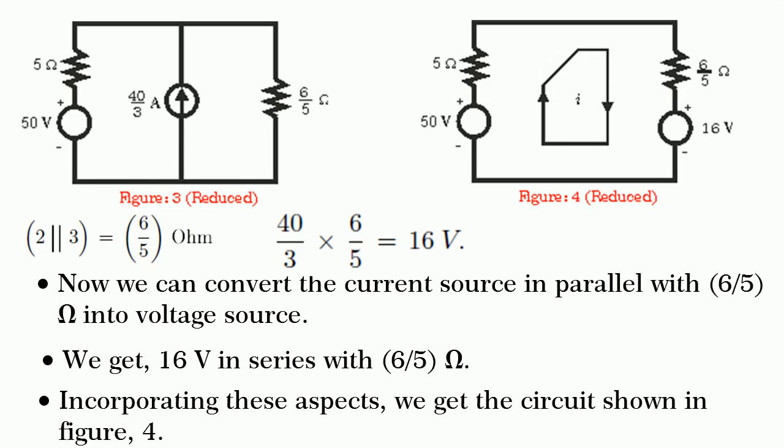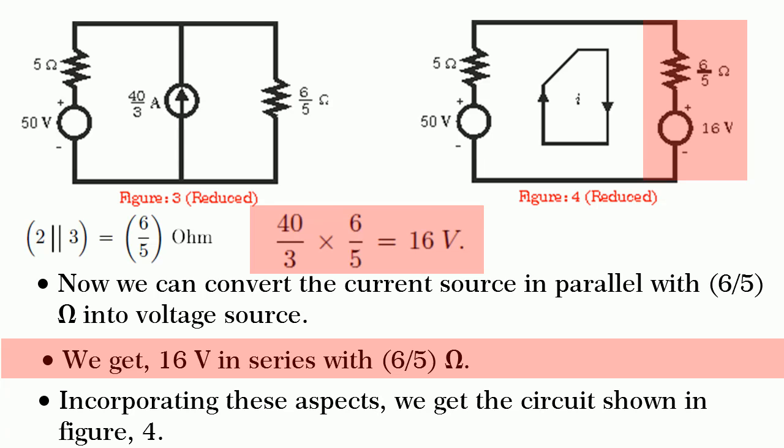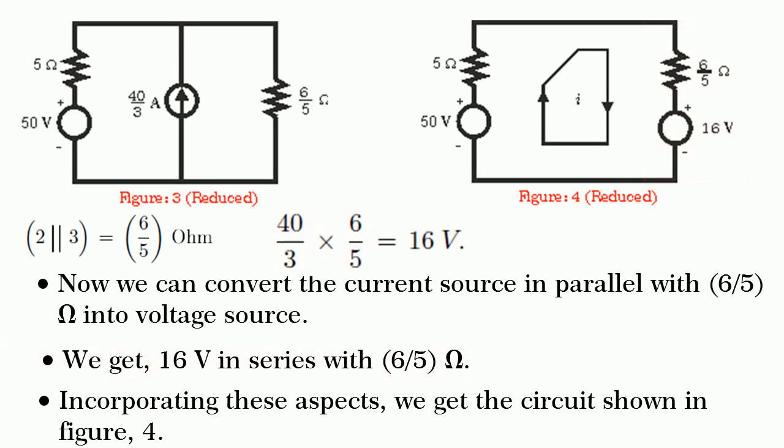Incorporating these reductions, we get the circuit shown in figure 3. Now, by converting 40 divided by 3 ampere current source, we get 16 volts in series with 6 divided by 5 ohm as shown in figure 4. Now, you see that the circuit is reduced to a single loop network.